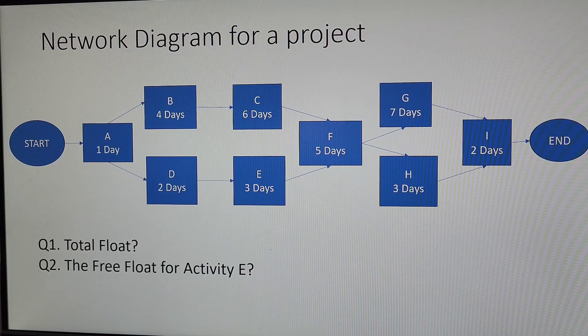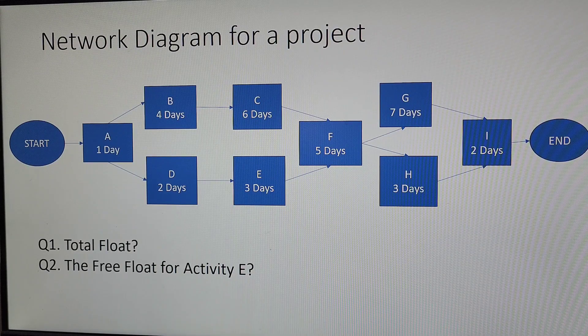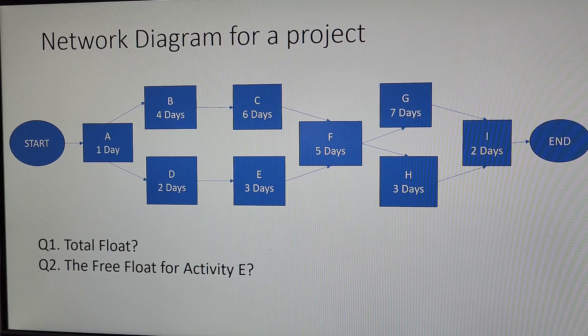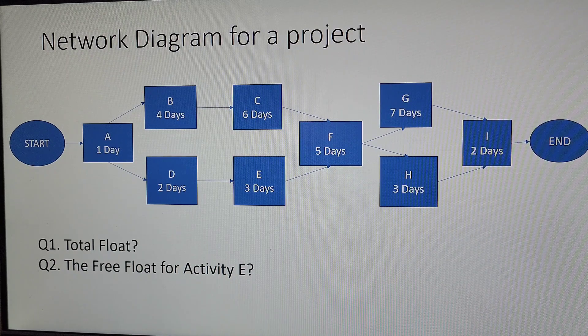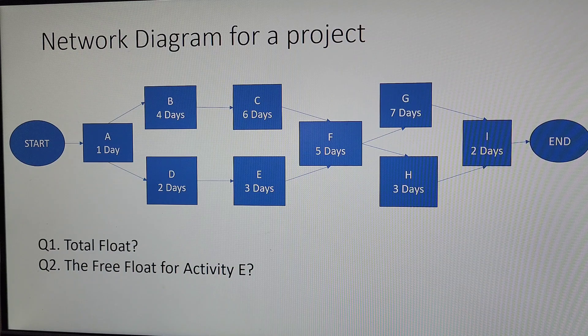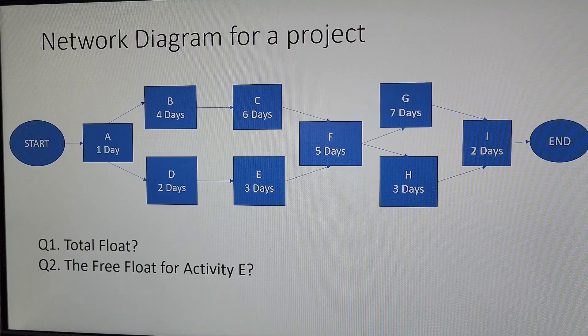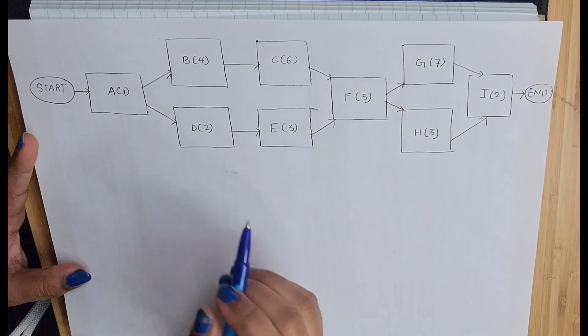As you can see, this is the question that we are going to solve. In this question, a network diagram for a project is given and they have asked to calculate the total float and the free float for activity E. So now let's see how to calculate these. This is the question I have written.